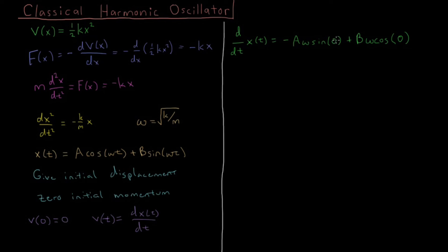This sine of zero immediately goes to zero. The cosine term goes to one, so we have B omega. Since this has to equal zero at time zero, we have that zero equals B omega.